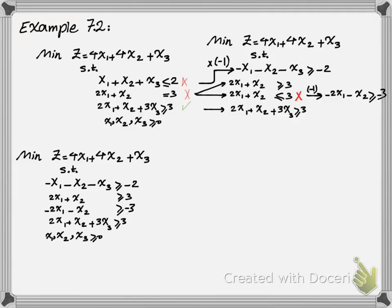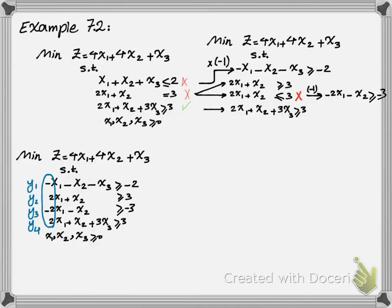A normal min problem's dual programming is going to be a normal max problem. To write the dual programming, instead of writing the coefficients as a matrix and transposing it, I'm going to write one variable associated to each of the constraints. Then my first constraint is going to be the multiplication of these variables with the coefficient of x1 — so one equation for each column. My first equation is negative y1 plus 2y2 minus 2y3 plus 2y4. The second equation is the multiplication of y's with the x2 coefficients: negative y1 plus y2 minus y3 plus y4.